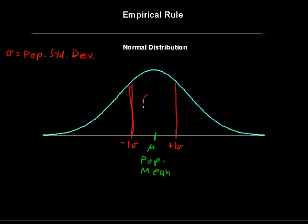then we have about 68% of the data lying between negative one and positive one standard deviations, or within one standard deviation from the mean.